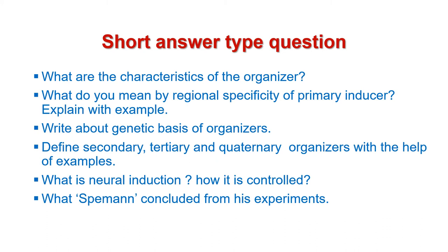The second category of questions are short answer type questions, which you have to answer in a single paragraph. The first question from this category is: what are the characteristics of the organizer? Next, what do you mean by regional specificity of primary inducer? Explain with example. Next, write about the genetic basis of organizers. Next, define secondary, tertiary and quaternary organizers with the help of examples.